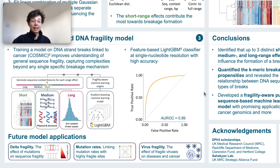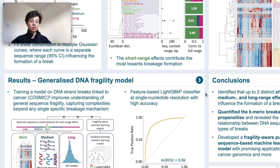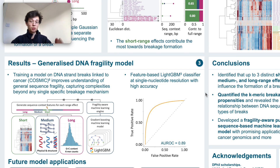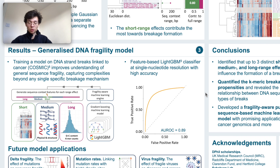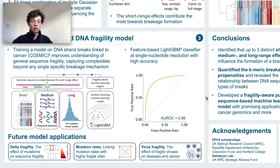Our model is a classification of whether a given position breaks or not, using all of the work so far with sequencing technology at single nucleotide resolution, so we predict at single nucleotide resolution. We have a roughly balanced dataset of true breaks and controls. The performance using the LightGBM model is quite good — 89% area under the ROC curve.